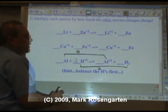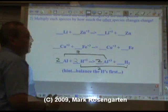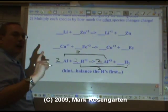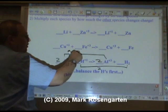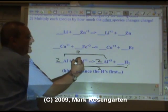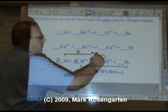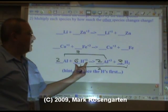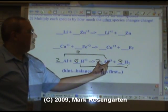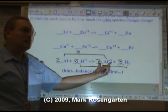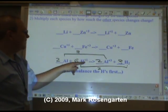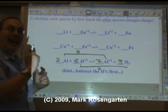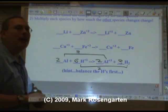The hydrogen changes by two, so multiply aluminum by two. The aluminum changes by three, so multiply the hydrogens by three. Three times two equals six. Three times one is three. We have plus six on this side, and two times three is plus six on this side. Two aluminums, two aluminums, six hydrogens, six hydrogens. The law of conservation of mass and the conservation of charge are obeyed.